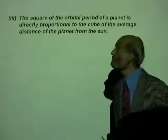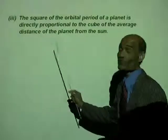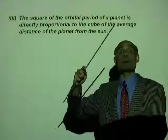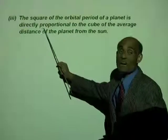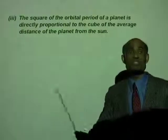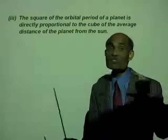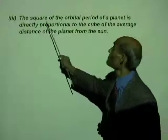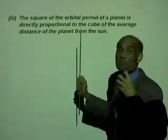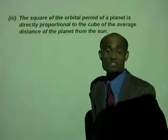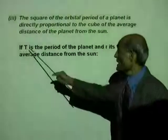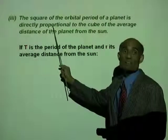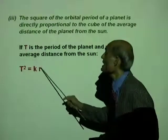Kepler's Third Law is quantitative. The square of the orbital period of a planet is directly proportional to the cube of the average distance of the planet from the Sun. The average distance is used because the orbit is elliptical and the distance varies. If t is the period and r is the average distance, then t² = kr³, where k is a constant.